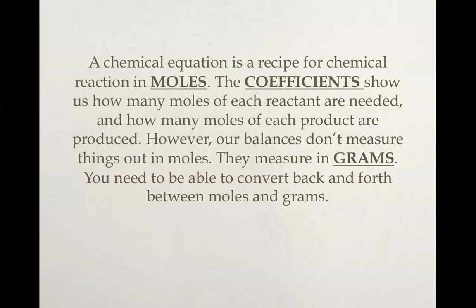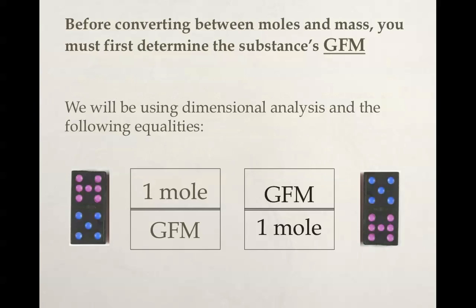A chemical equation is a recipe for chemical reactions, but it's in moles. The coefficients show us how many moles of each reactant are needed and how many moles of each product are produced. However, our balances, what we actually used in our lab, don't measure things out in moles. They measure in grams. So we need to be able to convert back and forth between moles and grams.